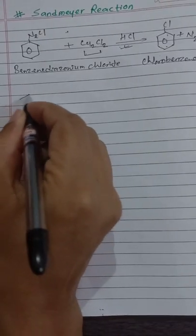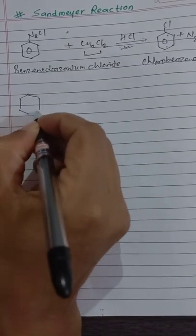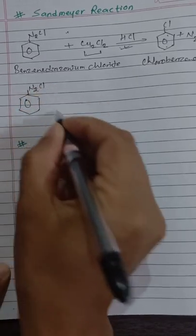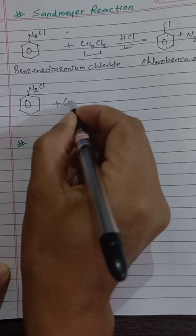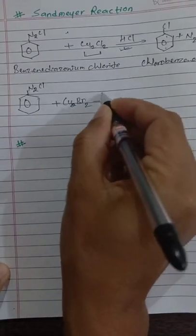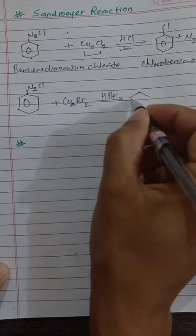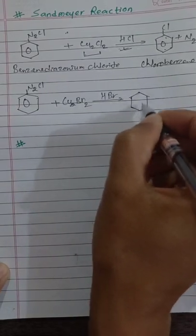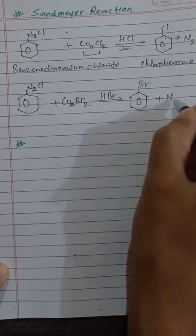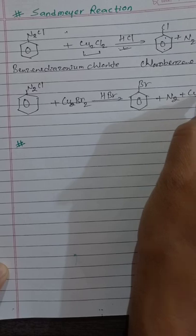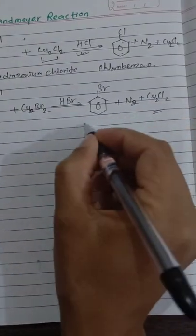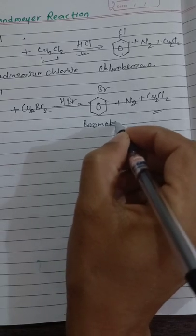When benzene diazonium chloride (N₂Cl) reacts with Cu₂Br₂, cuprous bromide, in the presence of HBr, bromobenzene is formed along with nitrogen gas and Cu₂Cl₂. This is benzene diazonium chloride, and the product formed here is bromobenzene.